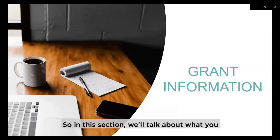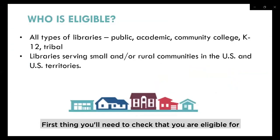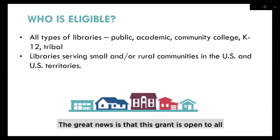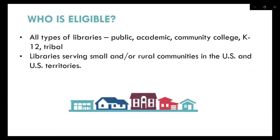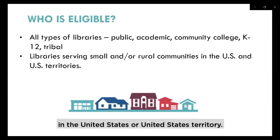In this section, we'll talk about what you need to know before applying for one of these $3,000 grants. First, you'll need to check that you are eligible for this opportunity. The great news is that this grant is open to all types of libraries, including public, academic, community college, K-12, tribal libraries, and special libraries. However, applicant libraries must serve small and rural communities in the United States or a United States territory.